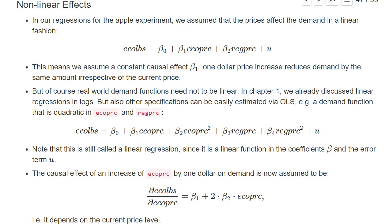Of course, at some point this cannot hold anymore because demand would be zero and then negative demand is unlikely. So this linear demand function is just a simplification — real world demand functions don't need to be linear. In chapter one we already discussed regression in logs, but you could also specify and estimate other specifications via OLS, for example a demand function that is quadratic in the price of ecological apples and perhaps also quadratic in the price of regular apples.